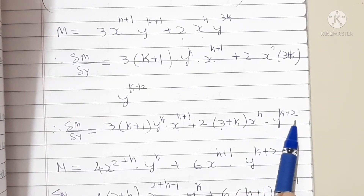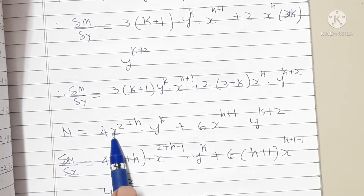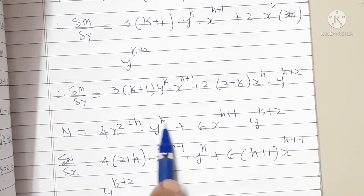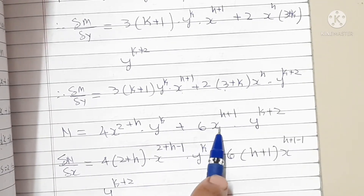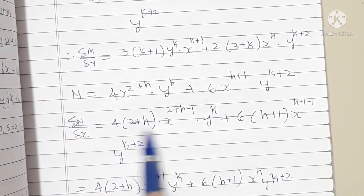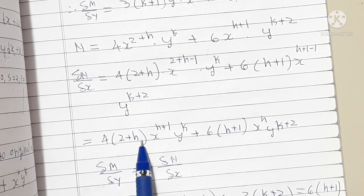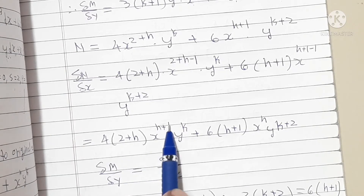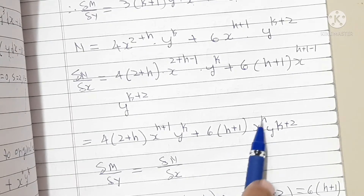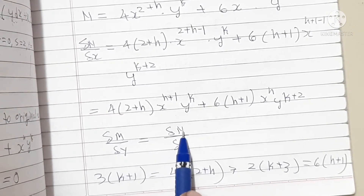N becomes: 4 · x^(h+2) · y^k + 6 · x^(h+1) · y^(k+2). Differentiating N with respect to x: ∂N/∂x = 4(h+2) · x^(h+1) · y^k + 6(h+1) · x^h · y^(k+2).